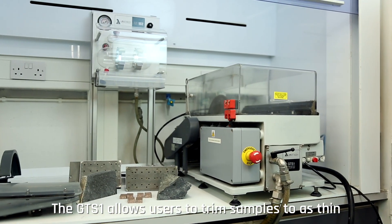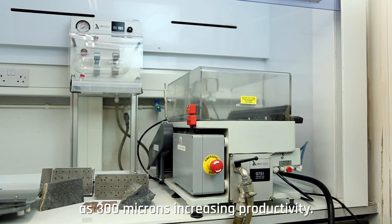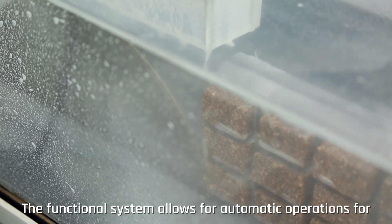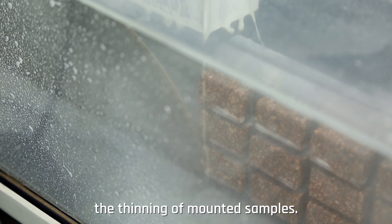The GTS-1 allows users to trim samples to as thin as 300 microns, increasing productivity. The functional system allows for automatic operations for the thinning of mounted samples.